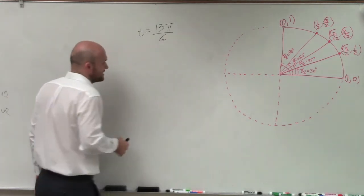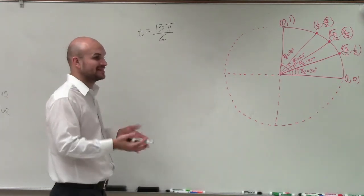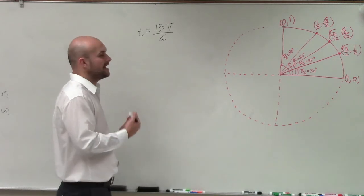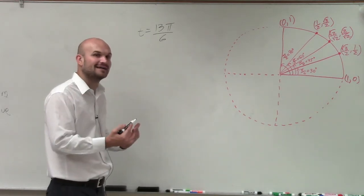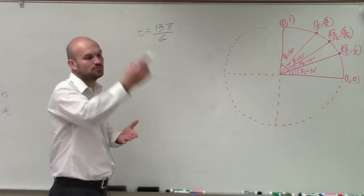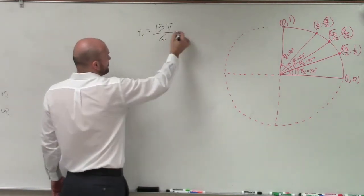So if I have 13 pi over 6, and I want to find an angle that's coterminal, but that's smaller than 13 over 6, I'm going to subtract 2 pi, because that's still going to give me that's just one revolution. Well, instead of subtracting 2 pi...